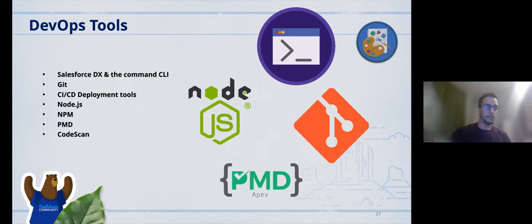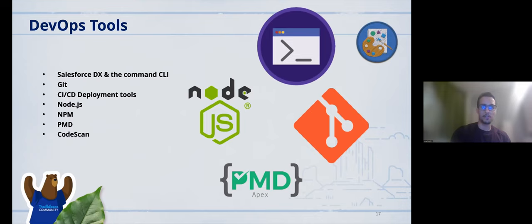Node.js, while not directly related to configuring packages in Salesforce, helps build applications that integrate with Salesforce and other web services. NPM helps manage dependencies. PMD and Code Scan help ensure unlocked packages are built with high-quality code — they identify security issues, ensure compliance with best practices, and can be easily integrated with tools like Git, Jenkins, or VS Code.